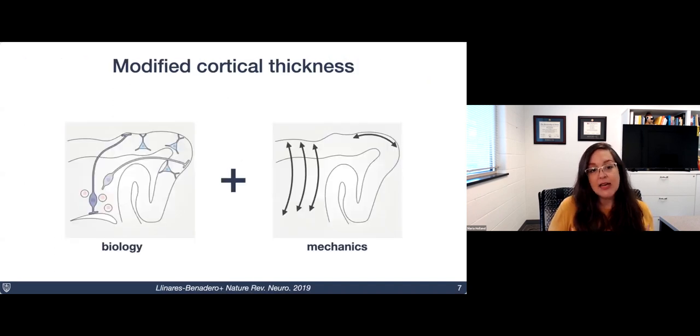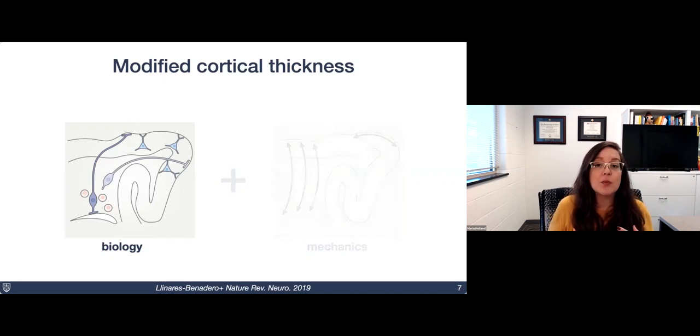So this gave us the idea: if we have these two factors, biology and mechanics, contributing to cortical thickness, and presumably the biology reflects more of the actual function of the cortex, then if we could remove the effect, account for and remove the effect of mechanics, we could come up with some modified cortical thickness that would better reflect the actual cell and tissue behavior that's contributing to cortical thickness and presumably to the functioning of the cortex.